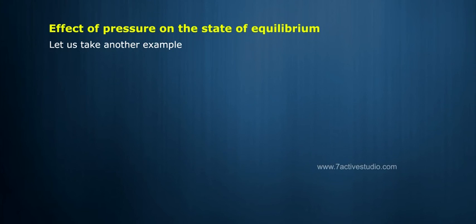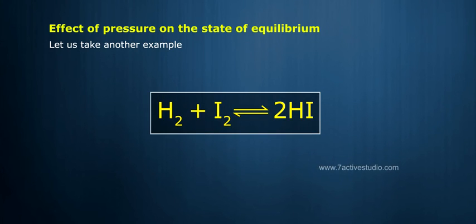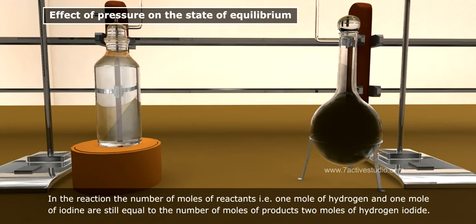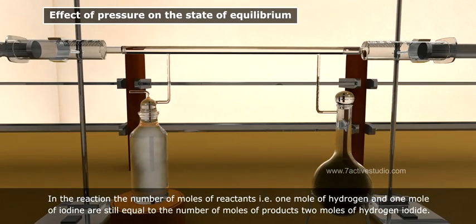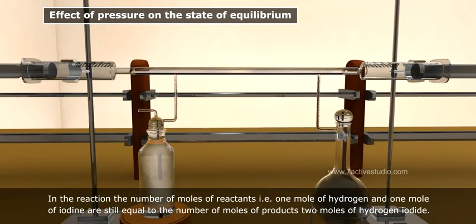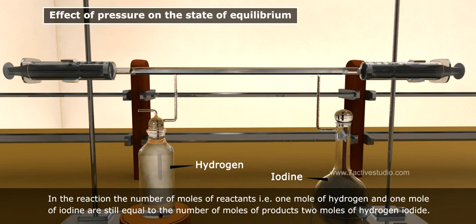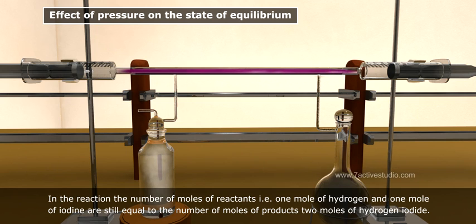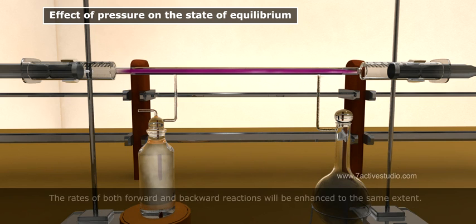Let us take another example. H2 plus I2 is reversible with 2HI. In the reaction, the number of moles of reactants that is 1 mole of hydrogen and 1 mole of iodine are still equal to the number of moles of products 2 moles of hydrogen iodide. The rates of both forward and backward reactions will be enhanced to the same extent.